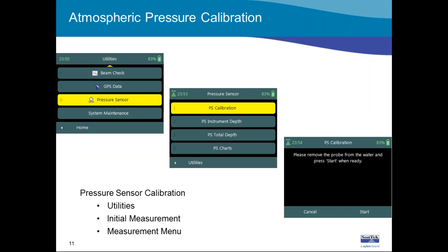On the utilities menu in the FlowTracker software, most functions are to diagnose instrument operations and measurement conditions. We don't actually record data displayed there except for the beam check option. Similar to the pressure sensor, we give you features to diagnose or verify instrument operation without creating a measurement file. You can perform a pressure sensor calibration, perform an instrument measurement depth, or determine the total depth — with graphics supplied. For example, if you're capturing data for reconnaissance, you can just take it out, make some spot measurements, and see what's going on.